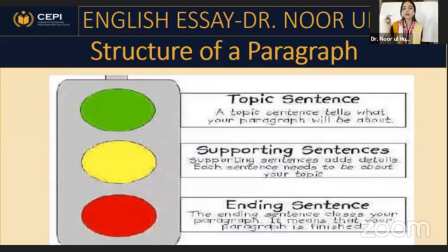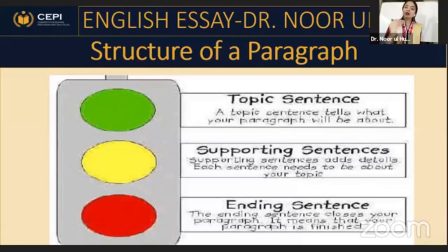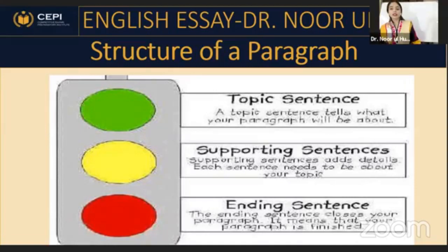Think of it like traffic lights. Green signal: what is your topic sentence — what does the paragraph tell? Yellow: the supporting sentences that elaborate and describe the topic sentence. Red signal: you end with the concluding sentence and sum up what you talked about.